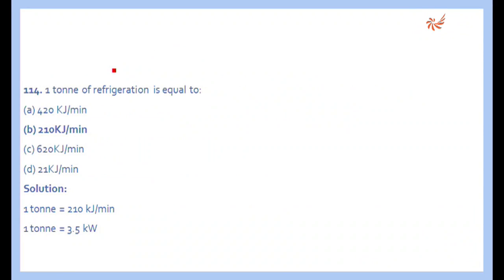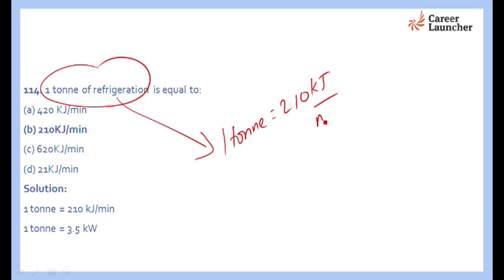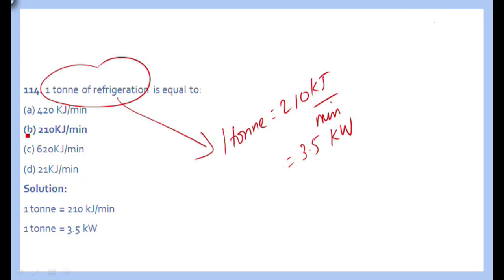The next question: one ton of refrigeration — by definition, one ton of refrigeration is equal to 210 kilojoules per minute, and in terms of kilowatts it is 3.5 kilowatts. The right answer is B.